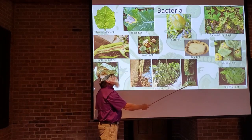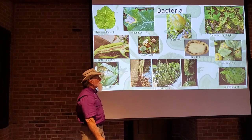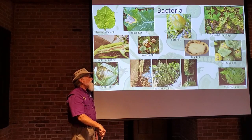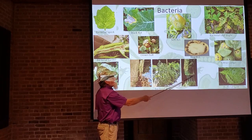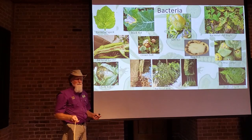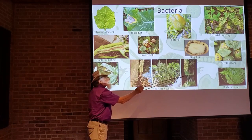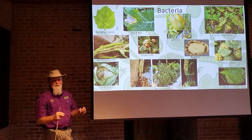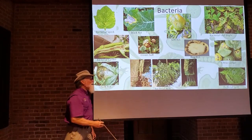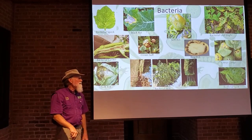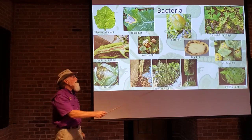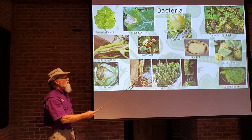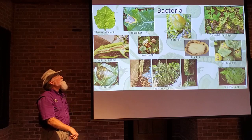A unique diagnostic symptom: when a stem infected with bacterial wilt is cut apart, it has sticky, slimy strings that form as you pull it apart — these are bacterial strings. You can also cut the stem and put it in a clear container of water, and you can see the bacteria oozing out and making streams down into the water. That's a diagnostic tool for bacterial wilt and bacterial diseases.